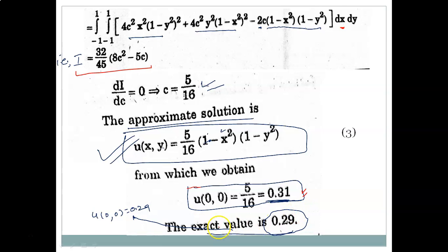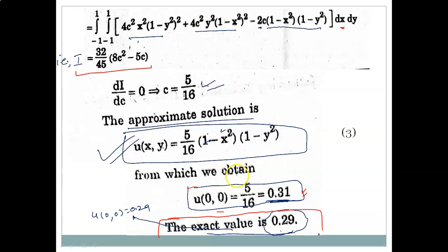If we evaluate the approximate solution at the point (0, 0), we get u(0,0) = 5/16, which can be compared with the exact solution. However, in this lecture we are not going to discuss the exact solution of this kind of partial differential equation — that is a separate topic — so we restrict our discussion only to the approximate solutions.